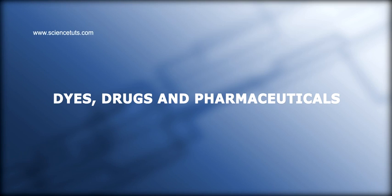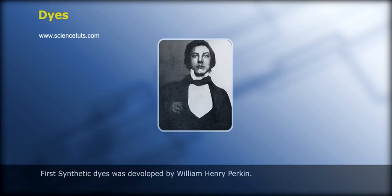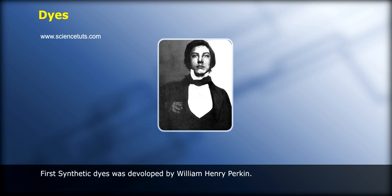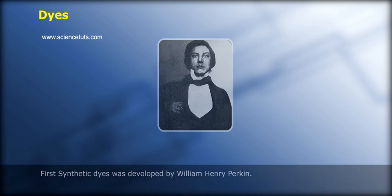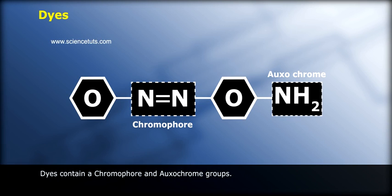Dyes, drugs and pharmaceuticals. Dyes: types of dyes and dye uses. The first synthetic dye was developed by William Henry Perkin. Definition: a natural or synthetic substance used to add color to, or change the color of, something.